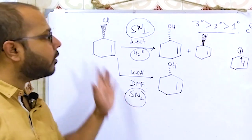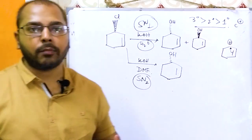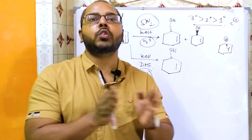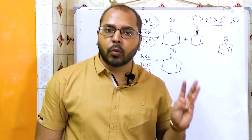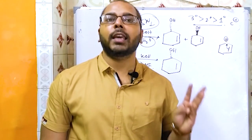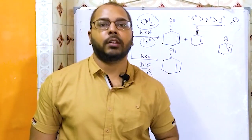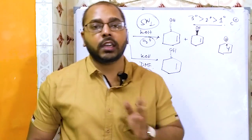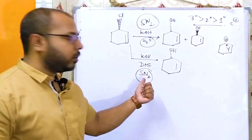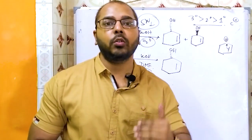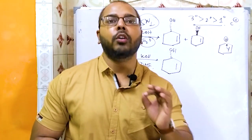To summarize: SN1 is favored when the carbocation is stable, the nucleophile is weak, and the solvent is polar protic like water — resulting in racemization. SN2 is favored when the substrate is small, the nucleophile is strong (like KOH), and the solvent is polar aprotic — resulting in inversion.